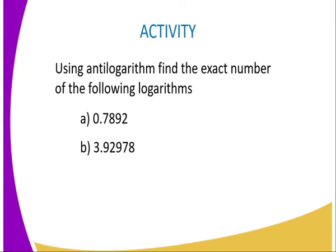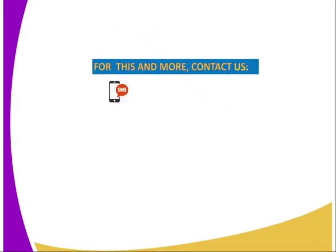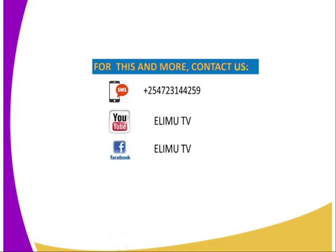We have come to the end of today's lesson. Your assignment: using anti-logarithm tables, find the exact number for (a) log 0.7892 and (b) log 3.9297. For reference, consult the Secondary Student Mathematics Book 2, published by the Kenya Literature Bureau. Thank you for joining me. Until next lesson, bye bye.